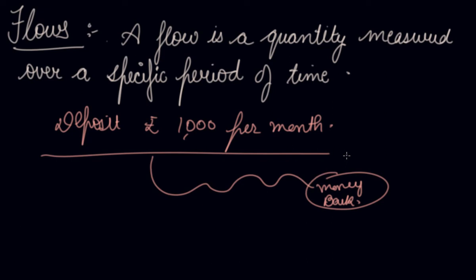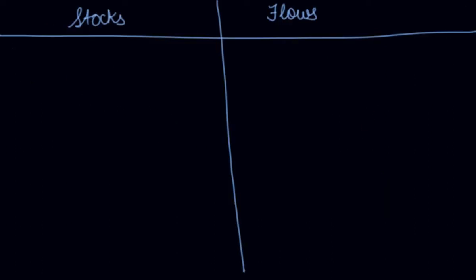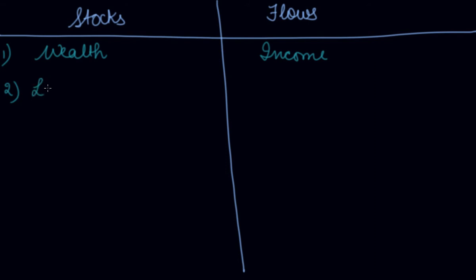Now let's understand which are stocks and which are flows. Your wealth — how much you have saved in your bank account after two years — is your stock. Every month you receive income, say rupees 20,000 — that is your flow. This is the first example.